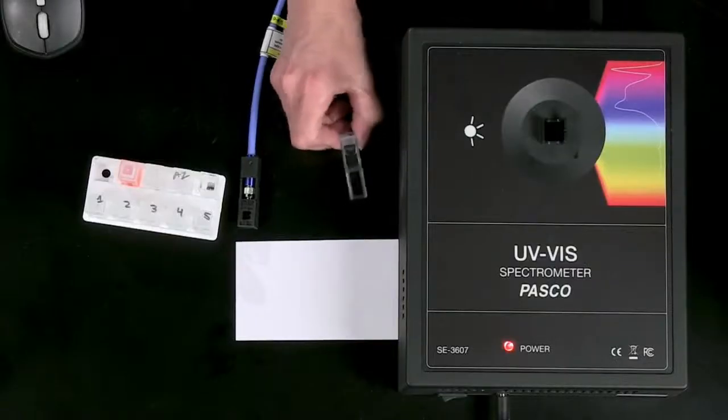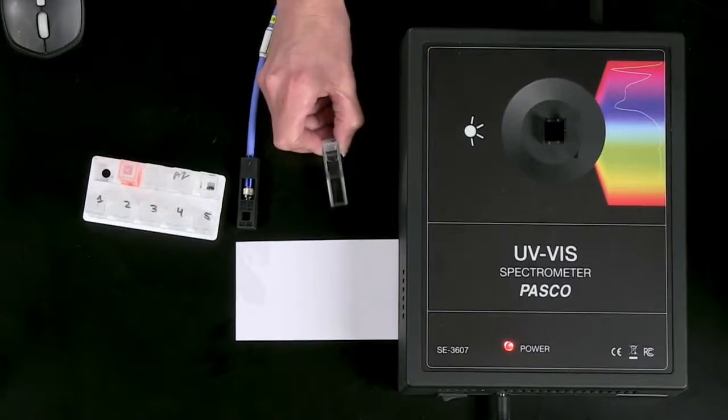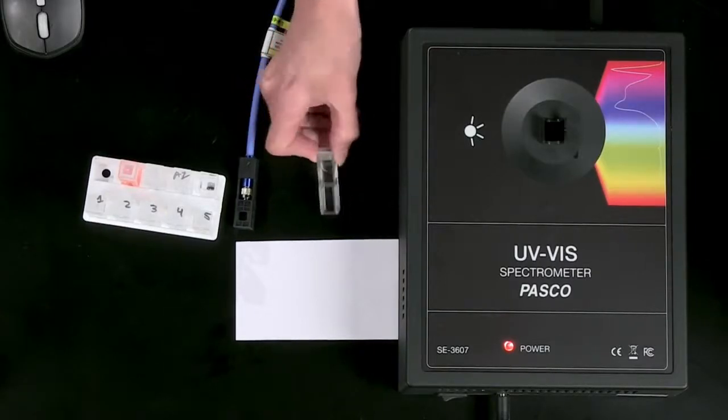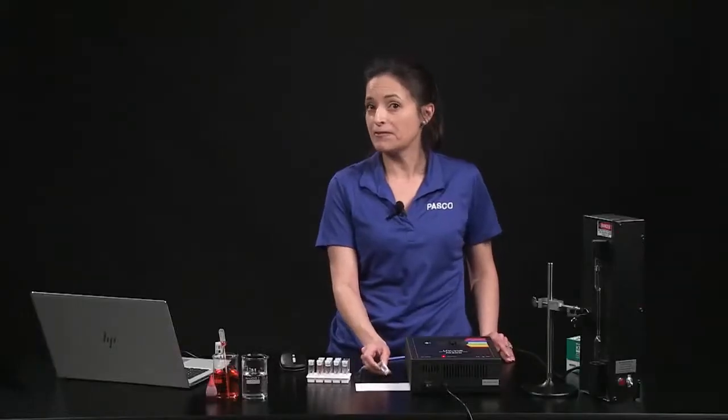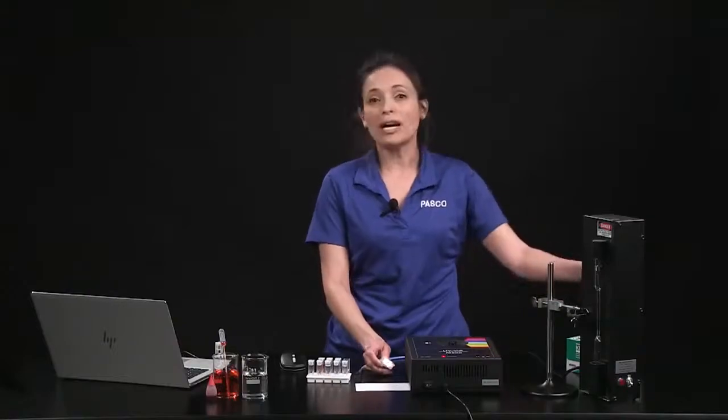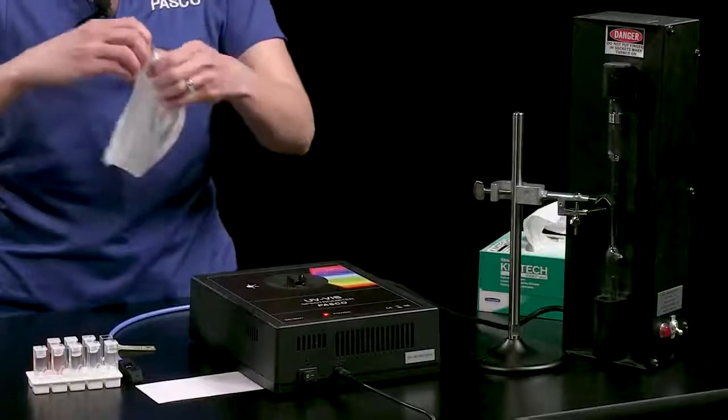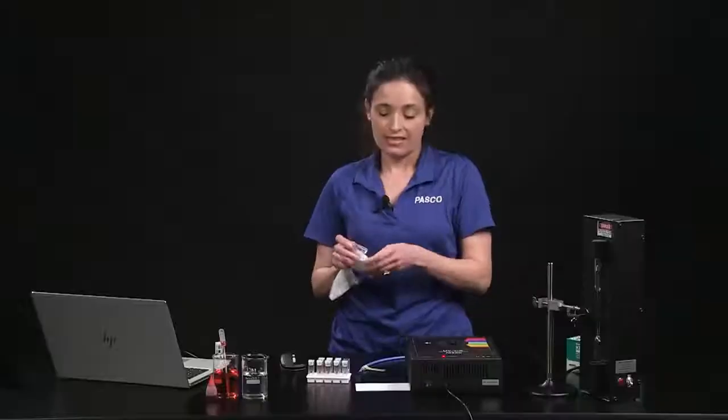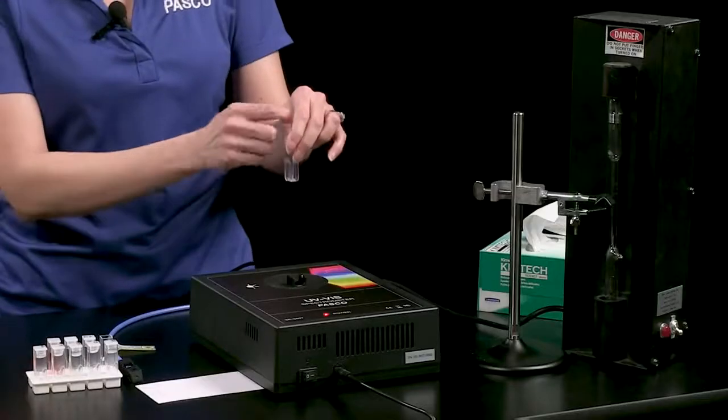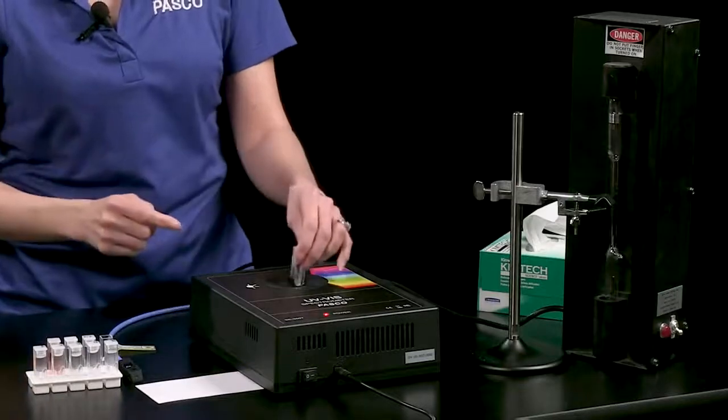Fill cuvettes about three-fourths full. The included cuvettes have frosted and clear sides. Handle the cuvette by the frosted sides to keep the clear sides clean and free of fingerprints. Wipe cuvettes with the lint-free lens wipe as needed. Position the cuvette so light travels through the clear sides and reaches the detector.